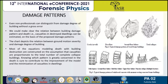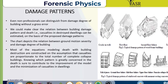The typical damage patterns of reinforced concrete moment resisting frame buildings include falling of pieces, ground floor failures, mid floor failures, upper floor failures, pancake collapse, and multiple fractures. The chart depicts the relation between ground motion severity and damage degree of buildings. Most equations modeling deaths with building destruction are constructed on the assumption that casualties are proportionate to the total number of complete collapse buildings. Knowing which pattern is most associated with death will contribute to improvement of the model and minimization of casualties.